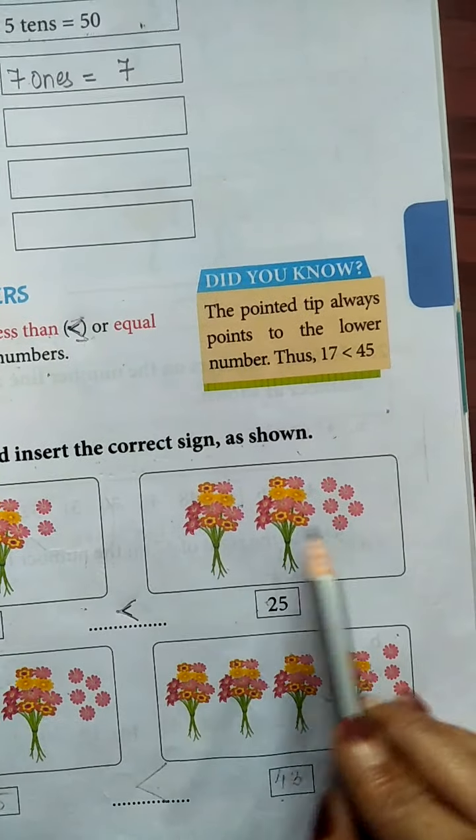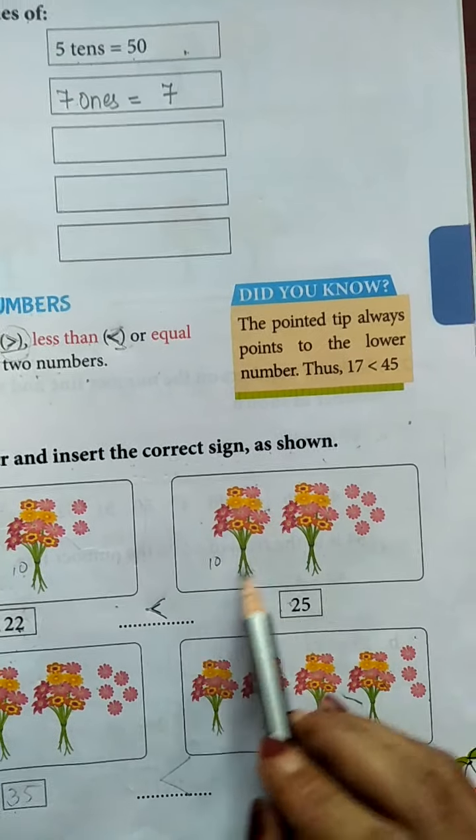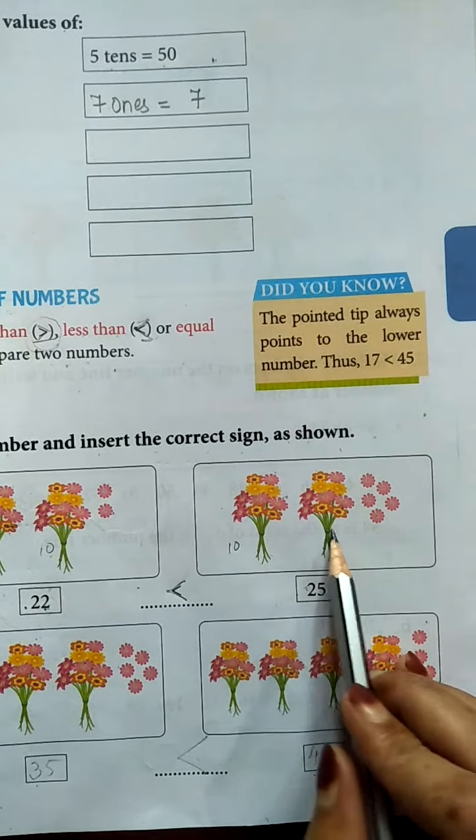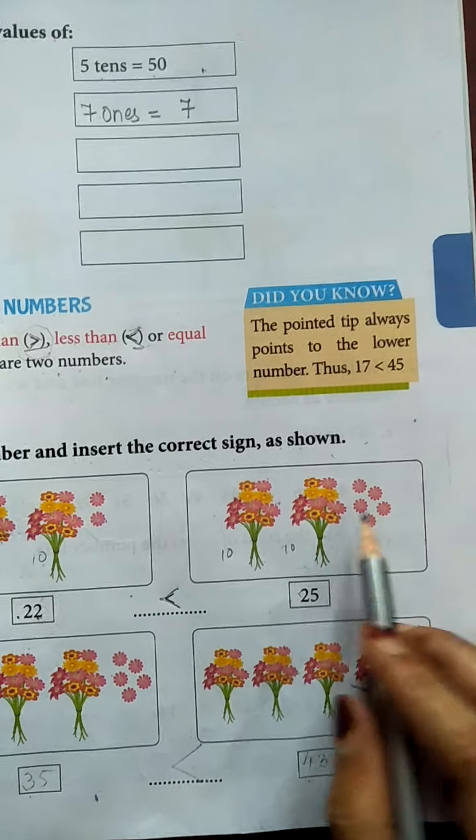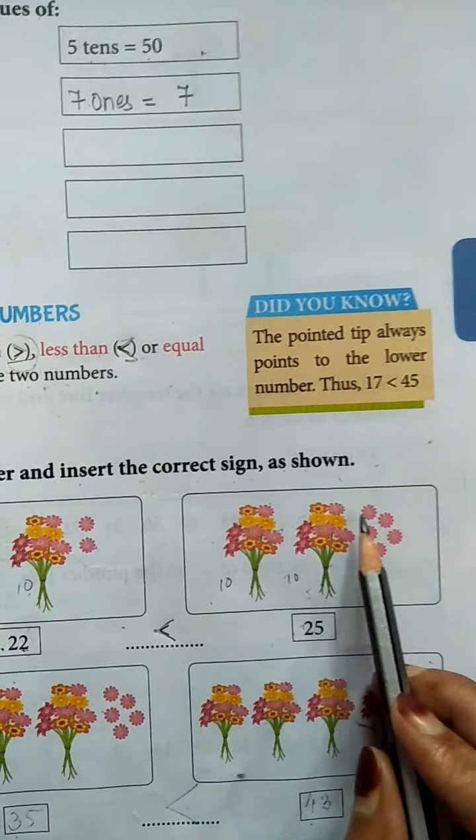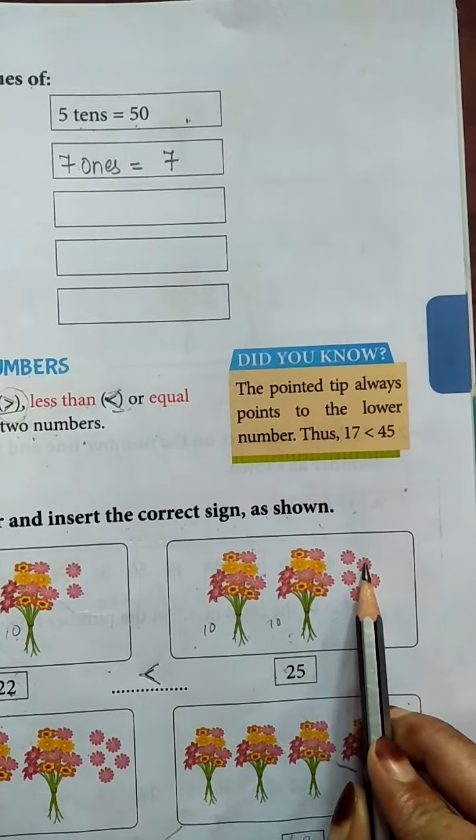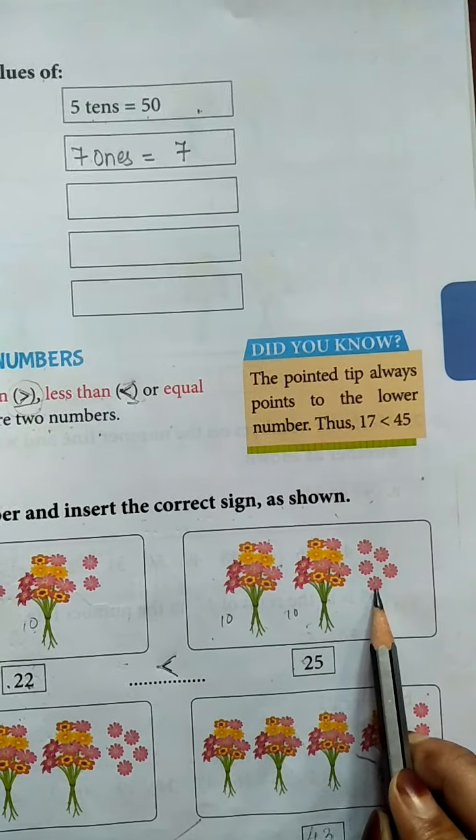Now next count these flowers. Now same. This is the bundle of 10 flowers. Here also same. The bundle of 10 flowers. Now 10 plus 10, 20, 21, 22, 23, 24 and 25.